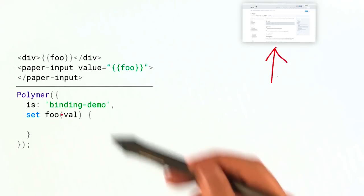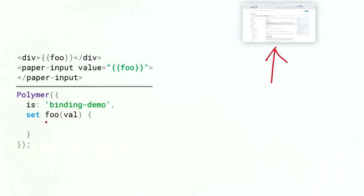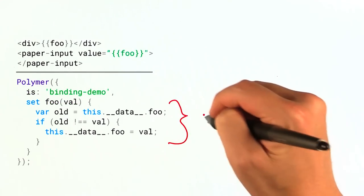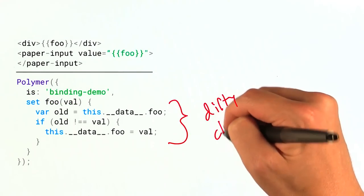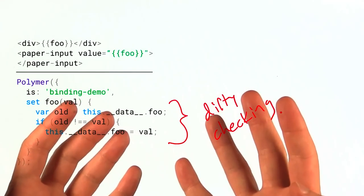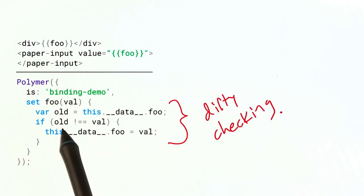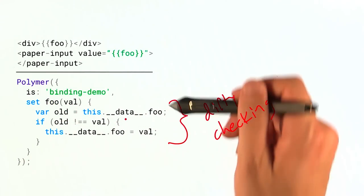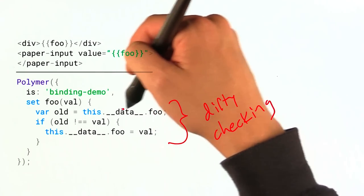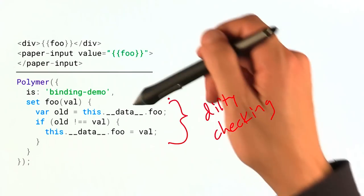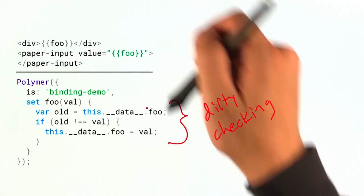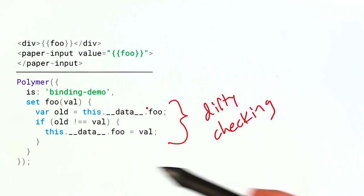And inside of this setter, there's a few interesting things that take place. The first is, any time the property changes, Polymer's going to do what it calls dirty checking. So a dirty check is when you compare an old value to a new value and you see if they've actually changed. And what Polymer does is it actually stores this foo property in a super duper private variable called underscore, underscore, data, underscore. And you can kind of poke around and see this in the DevTools as well. It stores the original value over there.